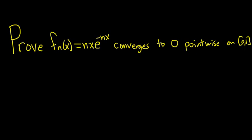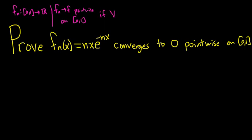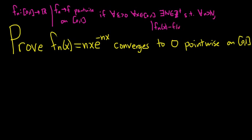First let's recall what it means for a sequence of functions to converge pointwise. We have a sequence f sub n defined on the interval [0, 1] into the real numbers. We say f sub n converges to f pointwise on [0, 1] if for every epsilon greater than 0 and for every x in [0, 1], we can find some positive integer N — which could depend on both epsilon and x — such that for all little n bigger than capital N, the distance between f sub n of x and f of x is less than epsilon.